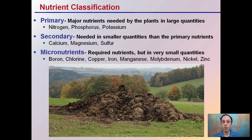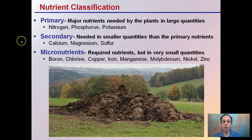Looking at nutrients, we want to classify them — there are three main categories. The primary nutrients are the major nutrients used by plants in large quantities: the NPK on the fertilizer label — nitrogen, phosphorus, and potassium. Secondary nutrients are needed in smaller quantities; the three secondary nutrients are calcium, magnesium, and sulfur. Lastly, micronutrients are required by the plant but in very small quantities.